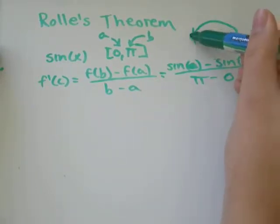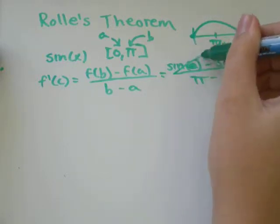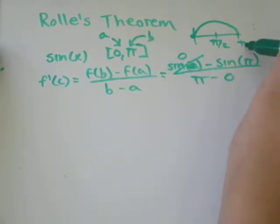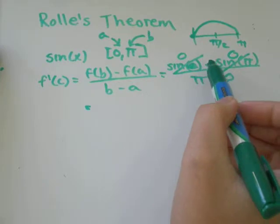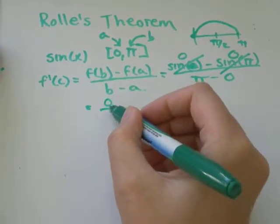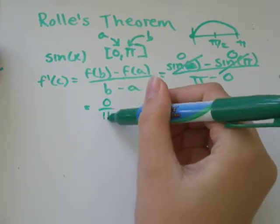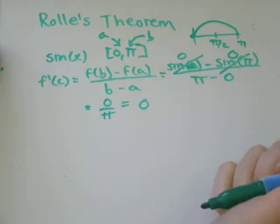So at zero, sin is equal to zero. At pi, sin is also equal to zero. So this will simplify down to zero minus zero, which is zero, over pi minus zero. Zero over pi is the same thing as zero.